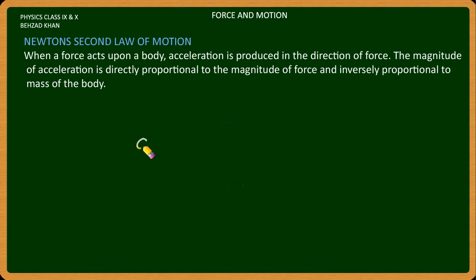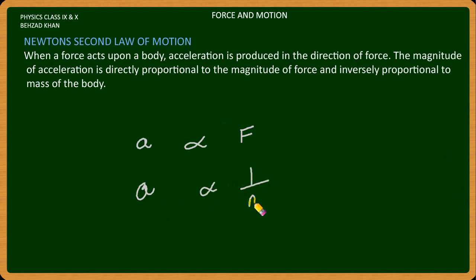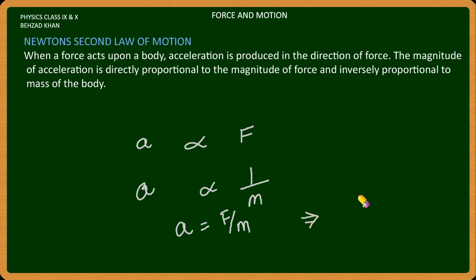Now if we write the relationship: acceleration is directly proportional to force, and acceleration is inversely proportional to mass. Combining these gives the equation F = ma.